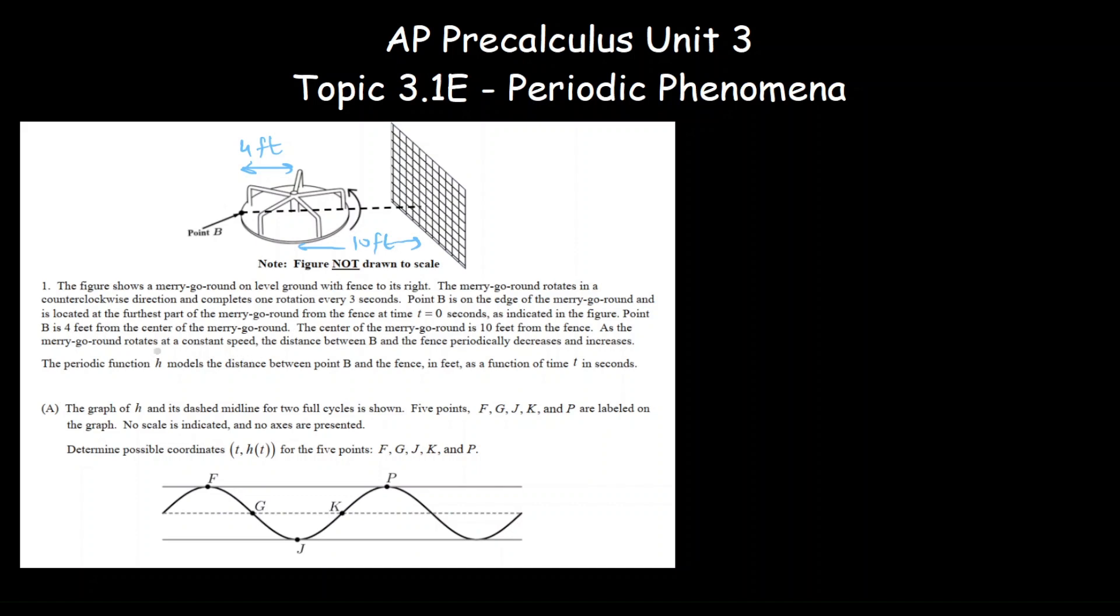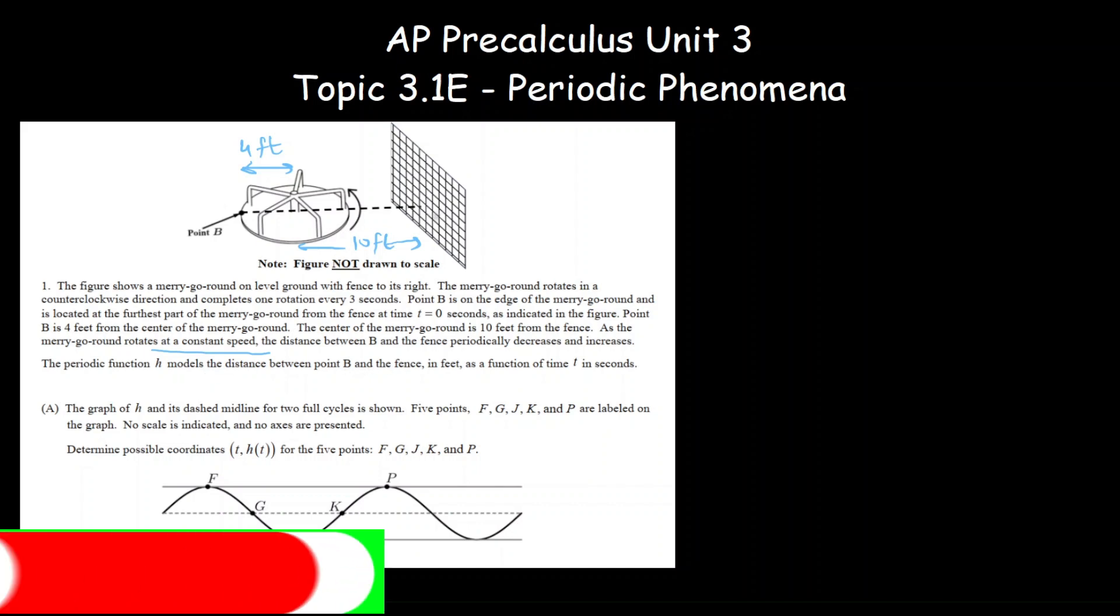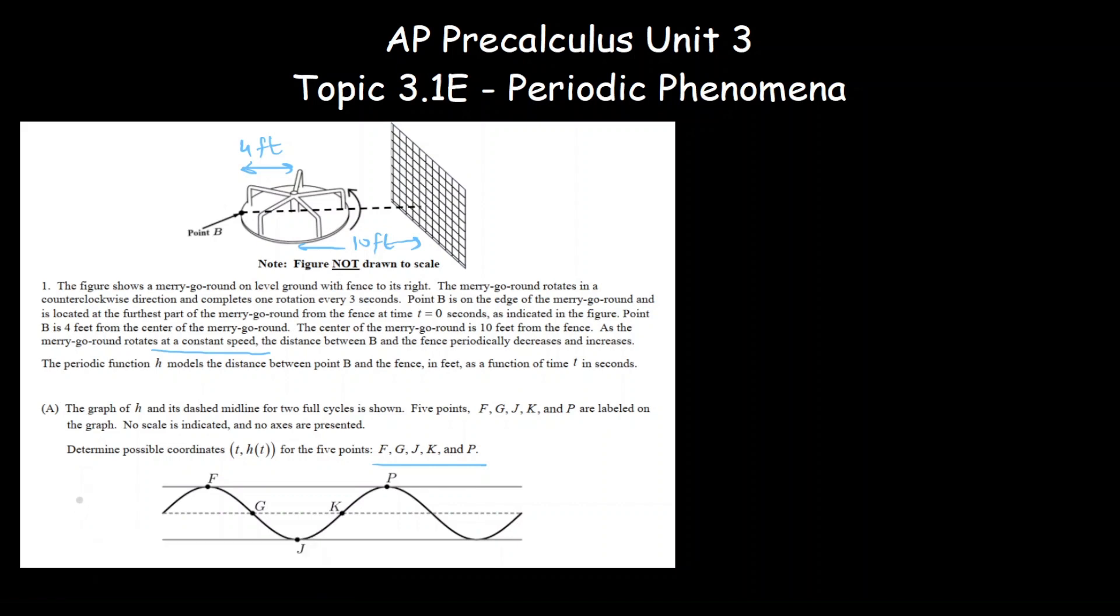They're asking that if it moves at a constant speed, then the distance of B from the fence is measured as a function of time. We have to find five points and need to find the coordinates of these points.